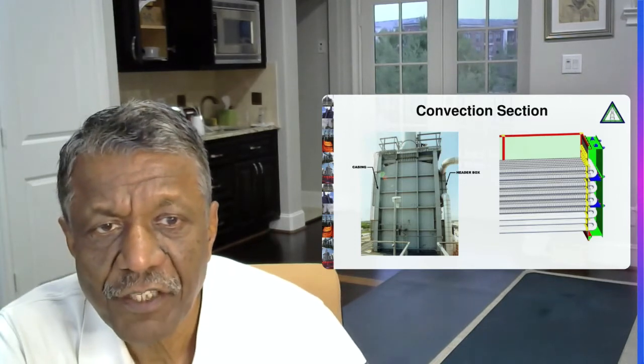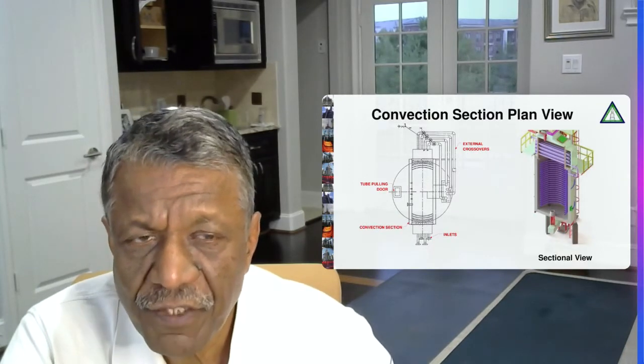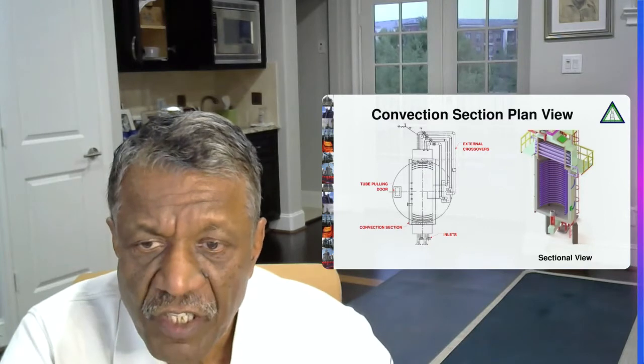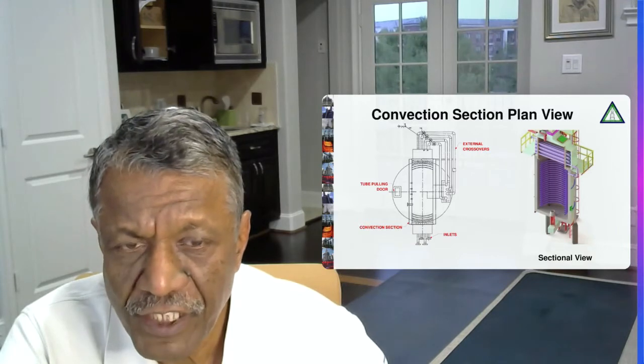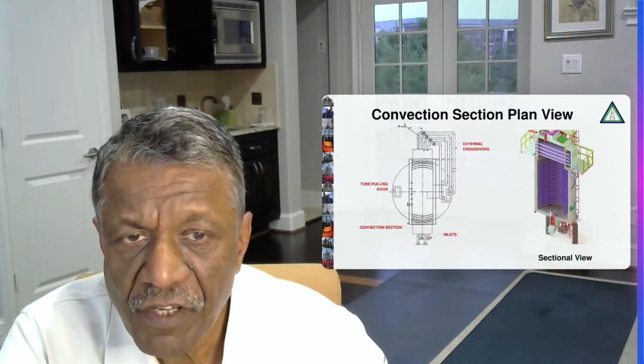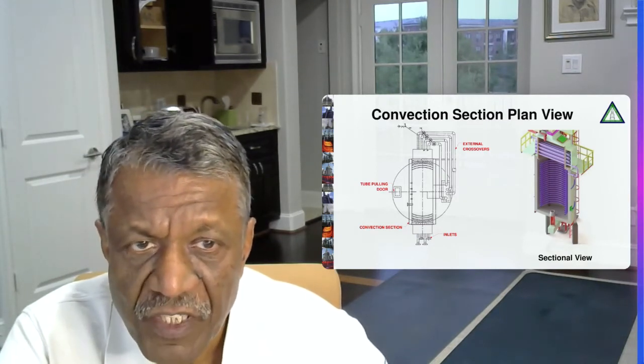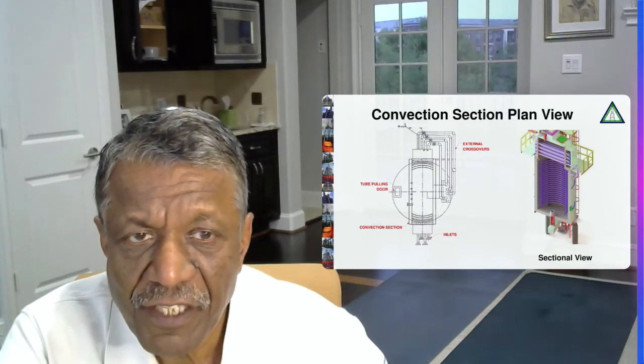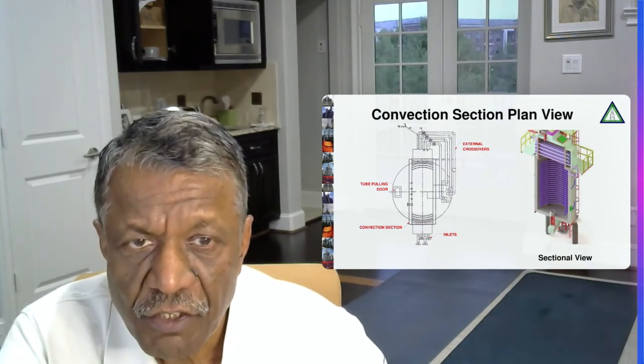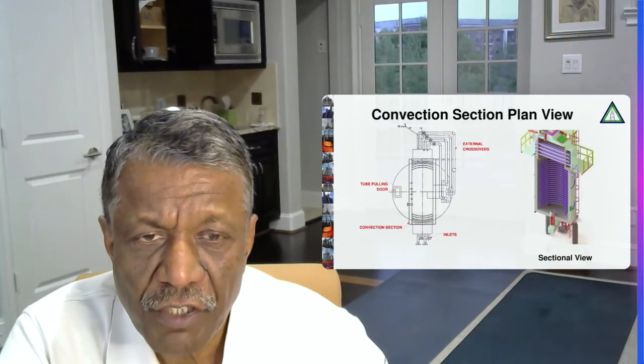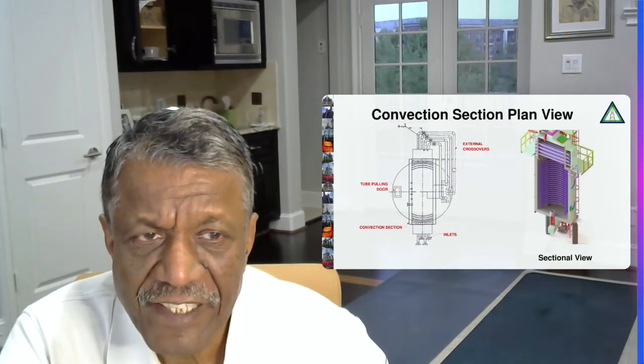You can see the casing, you can see the header boxes in the picture. This is a plan view of a convection section for again a vertical cylindrical heater. Feed generally enters the convection section because it is cold over there. And once it is heated, then the fluid is transferred from the convection section to the radiant section. That transfer takes place through the pipes which are known as crossovers. External crossovers are generally used nowadays. You can also see a tube pulling door for the maintenance purpose or for removing the tubes if they get damaged.